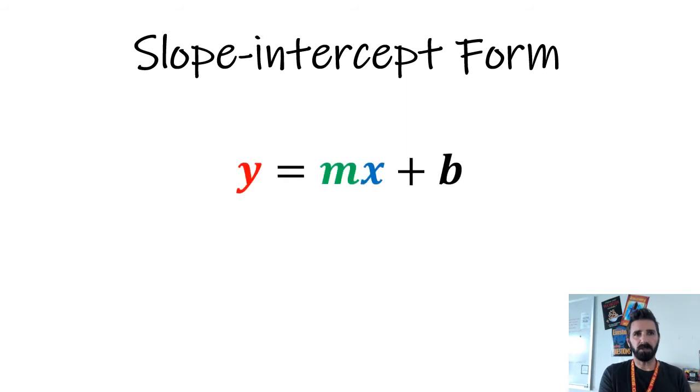Because when we're solving for these equations of lines, the only things that we're really interested in are the slope and the y-intercept. Those are the only two things that are going to change between any of these line equations.